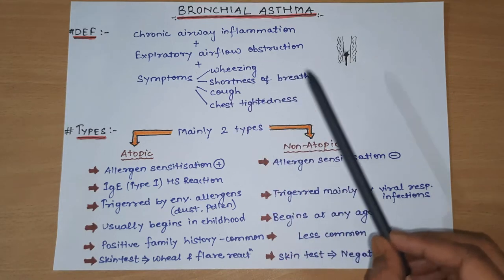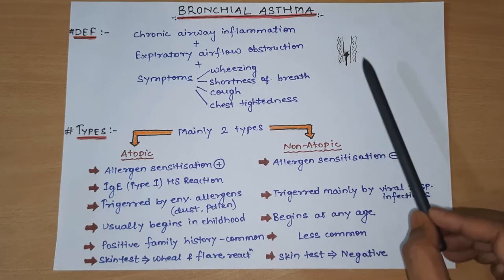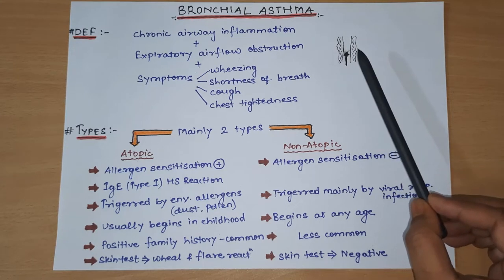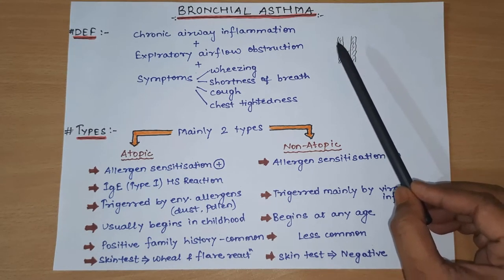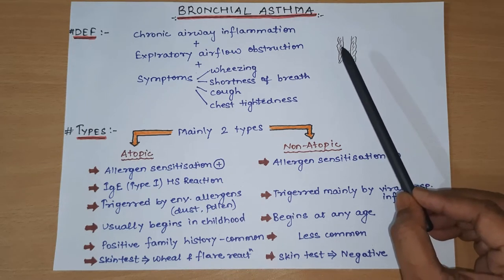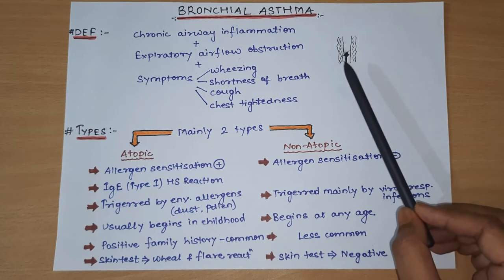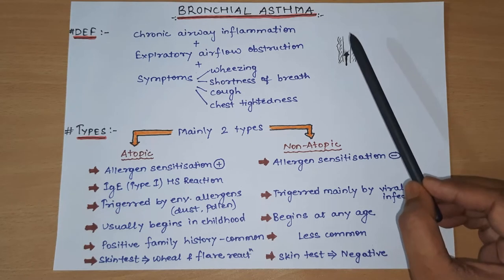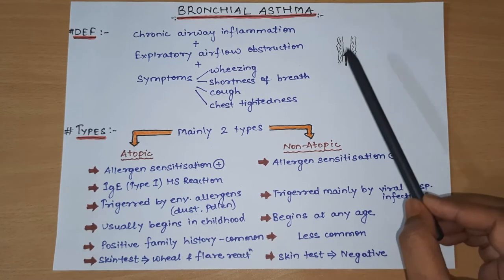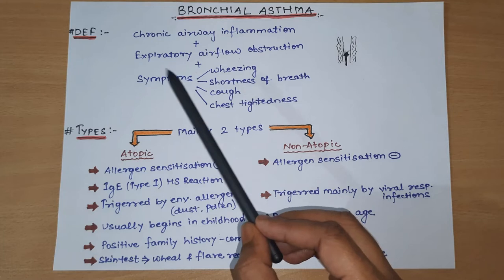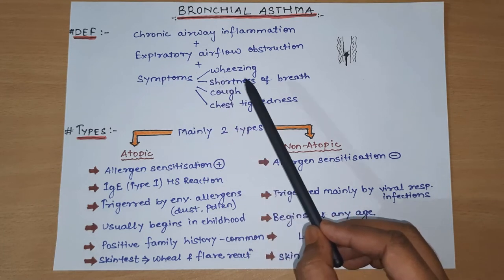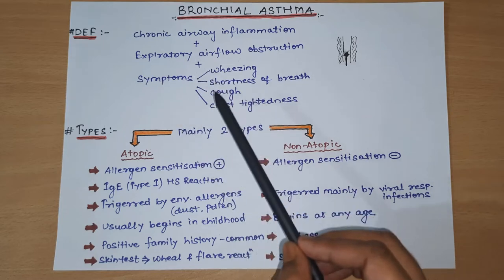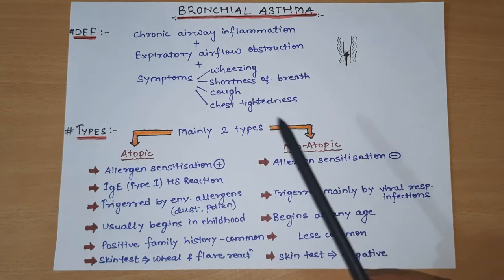This whole definition we can remember using this diagram - we can see the inflamed airway, which means the wall shows inflammation, there is expiratory airflow obstruction, and it is characterized by symptoms: wheezing, shortness of breath, cough, and chest tightness. So this is the classical definition of Bronchial Asthma.